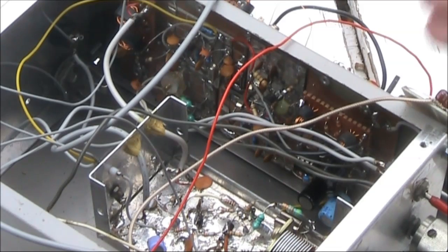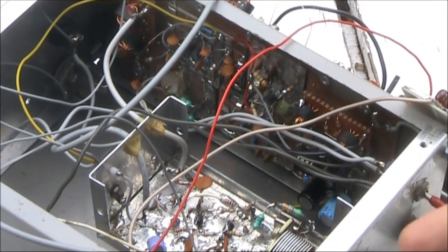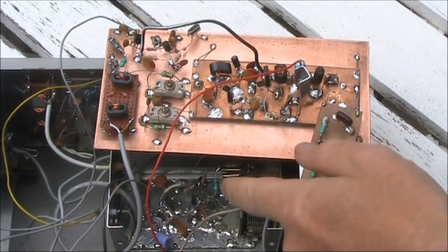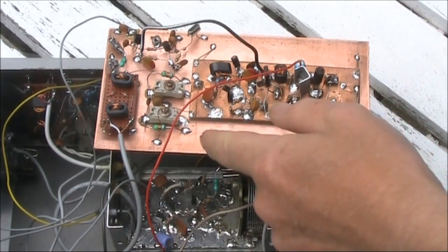This is the receiver section. Please see the previous two videos for a better description. Apart from the common 11MHz VFO, the transmitter and receiver are pretty much independent.